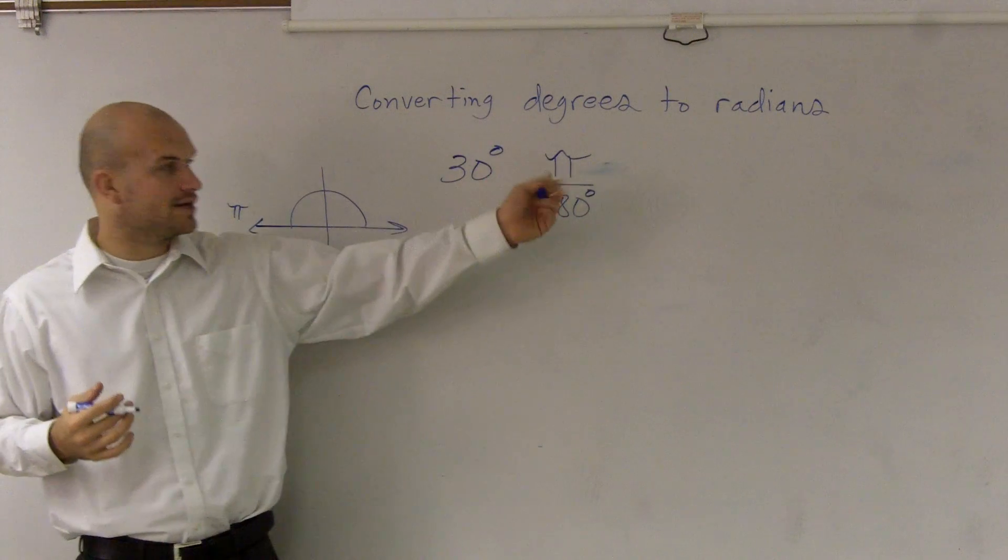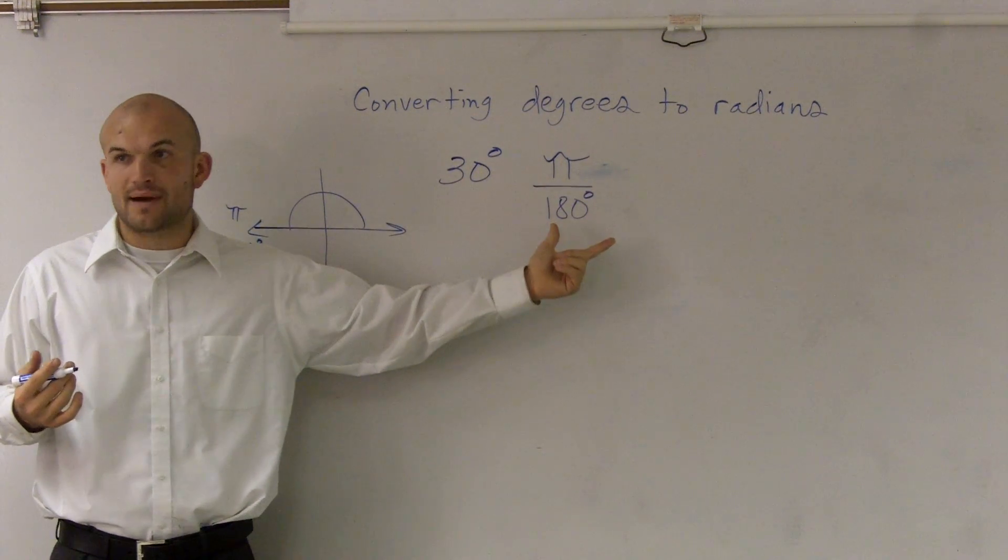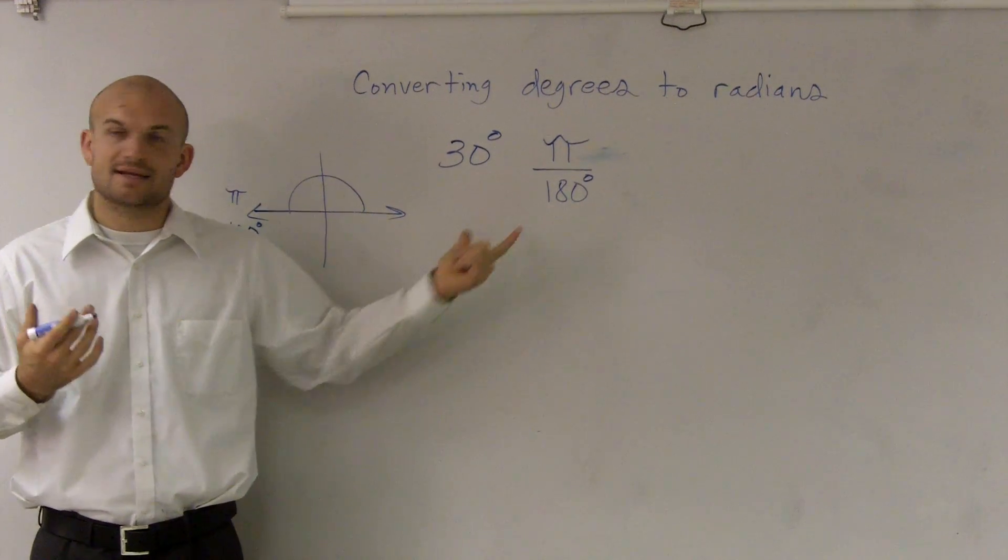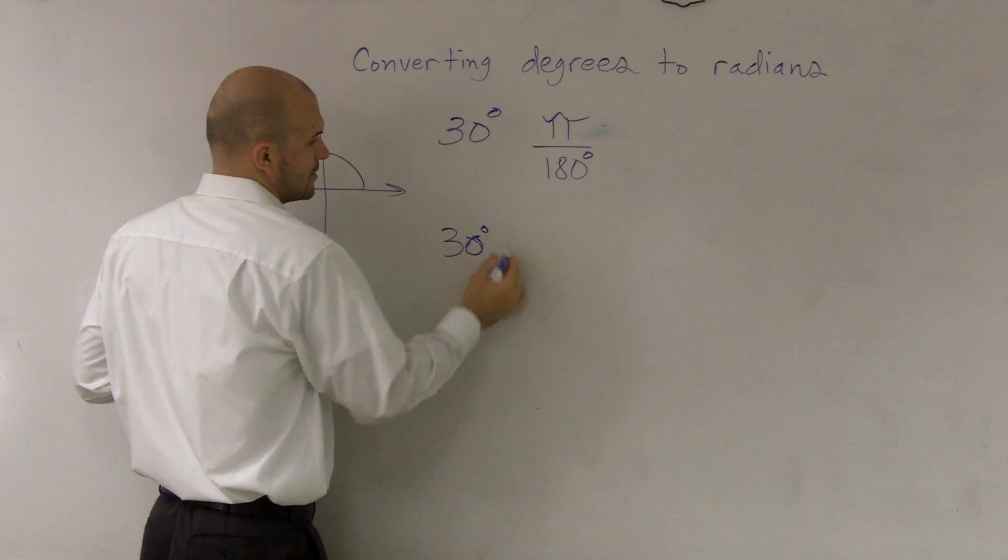The reason why I want to use this ratio as pi over 180 is because, remember, if I take a degree and divide it by a degree, they're going to cancel out. Look at it this way. For those of you that are physics people,